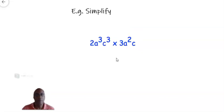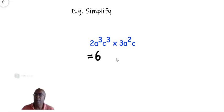Let's look at this example: we have 2a³c³ times 3a²c. As we did before in algebra simplification, we multiply the like terms. So 2 times 3 is 6 for the numbers. a cubed times a squared — we add the powers and get a to the power of 5. And c cubed times c — we add the powers and get c to the power of 4. Remember, c alone is c to the power of 1. And that is the answer: 6a⁵c⁴.